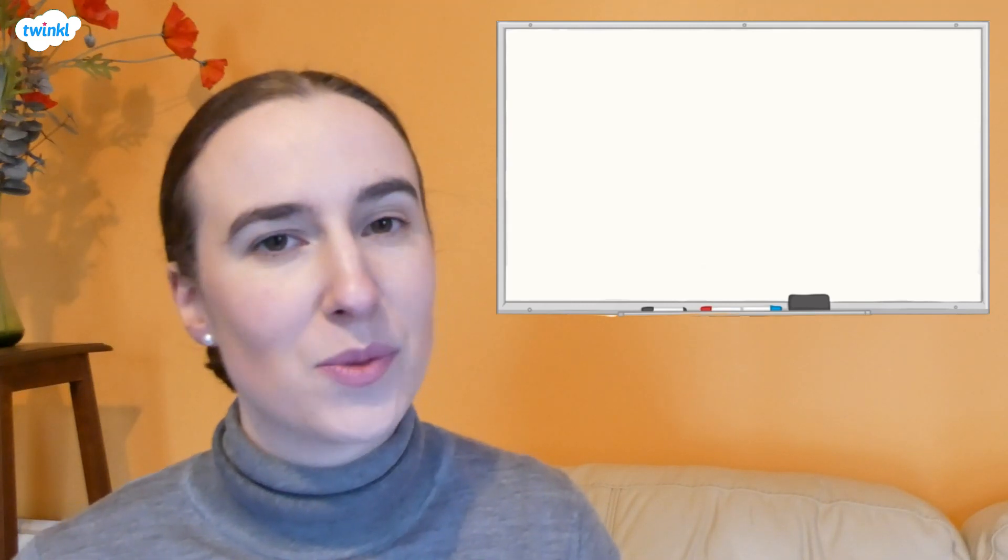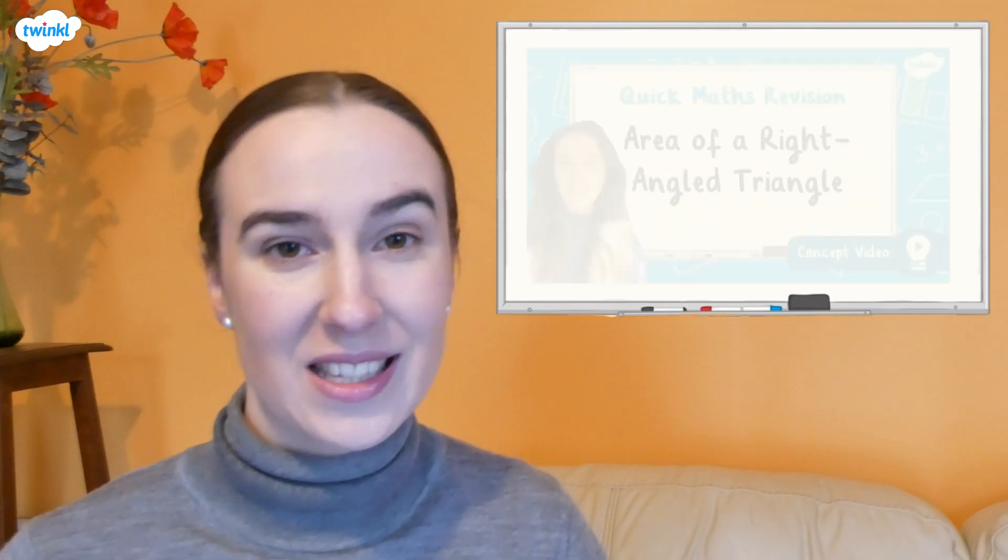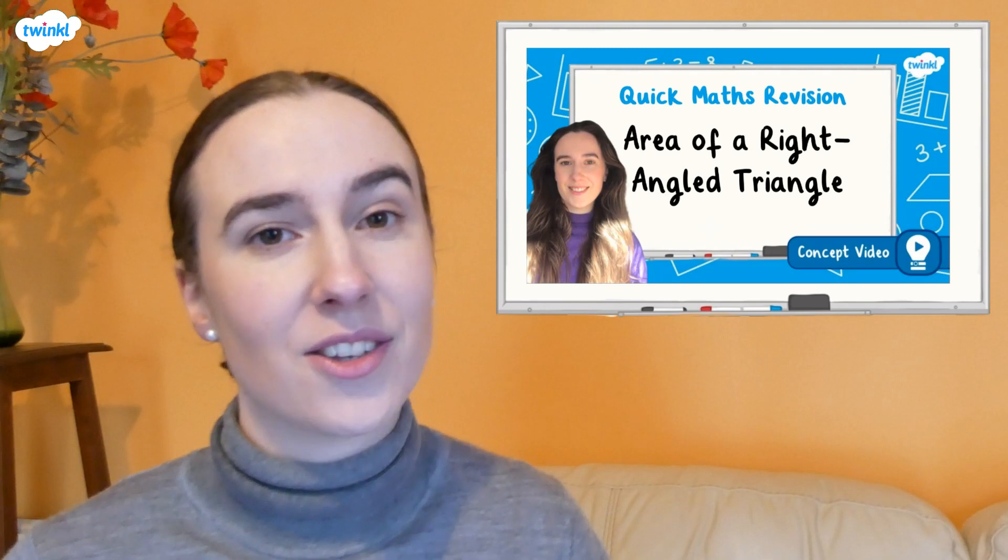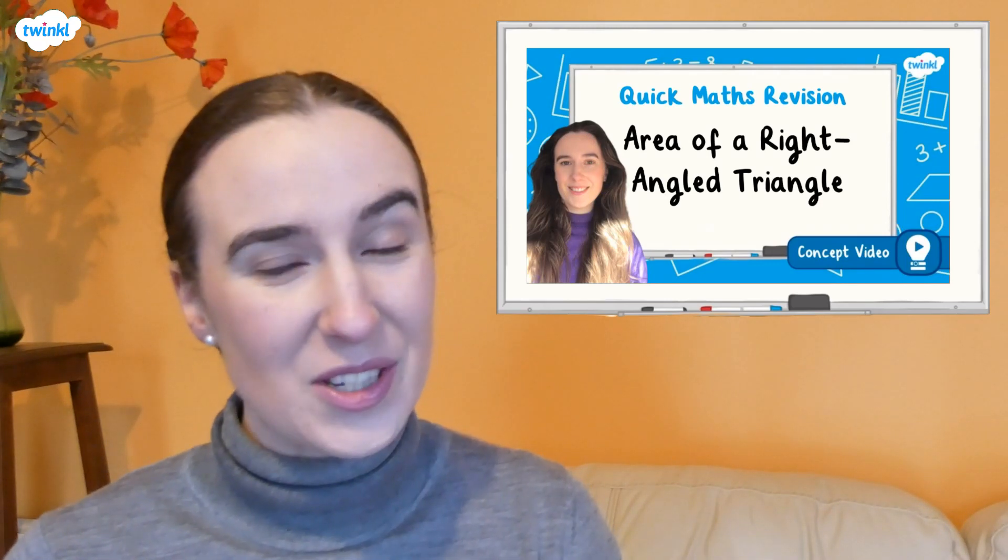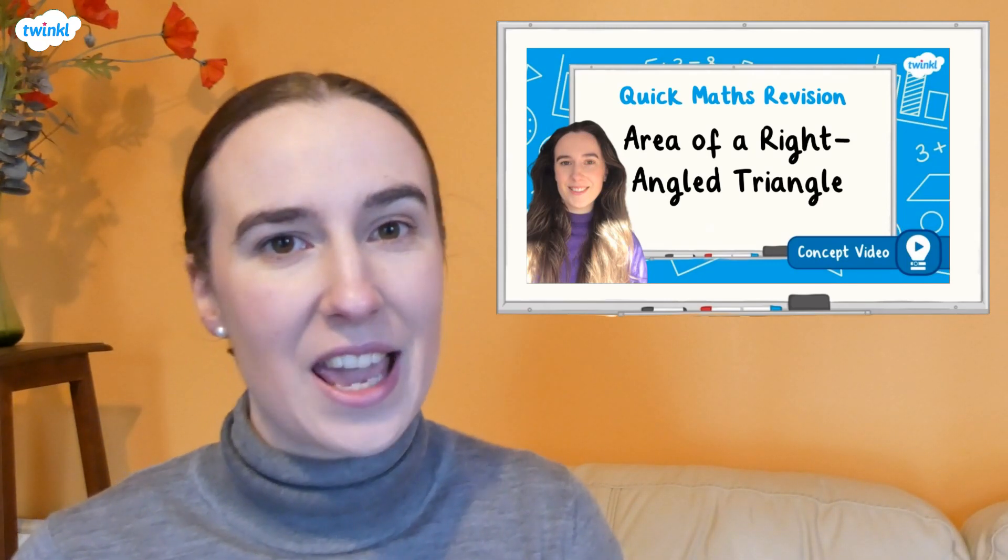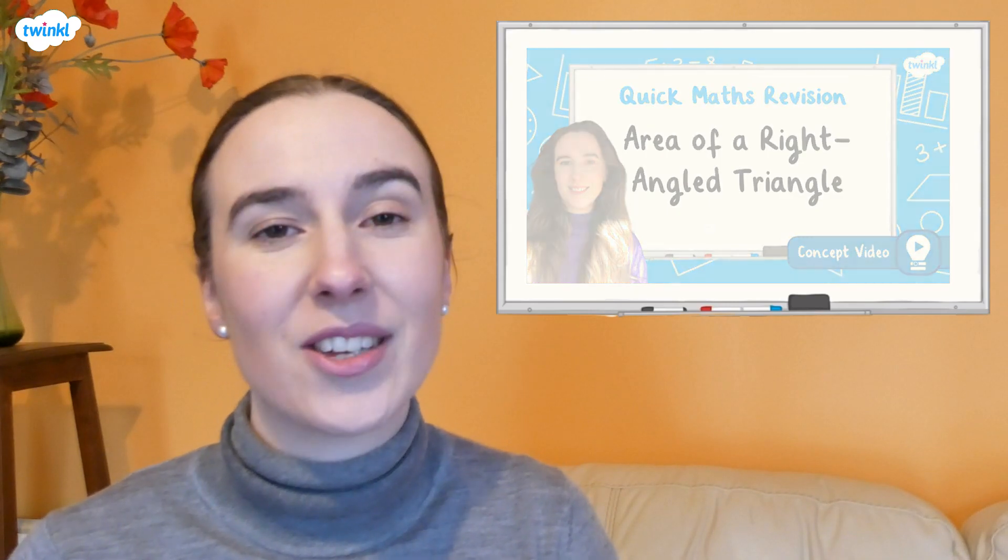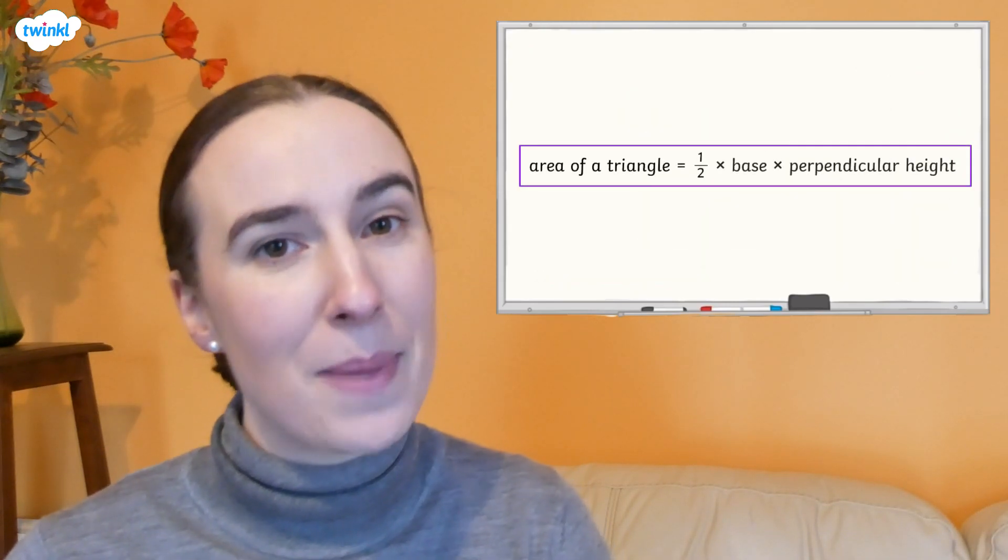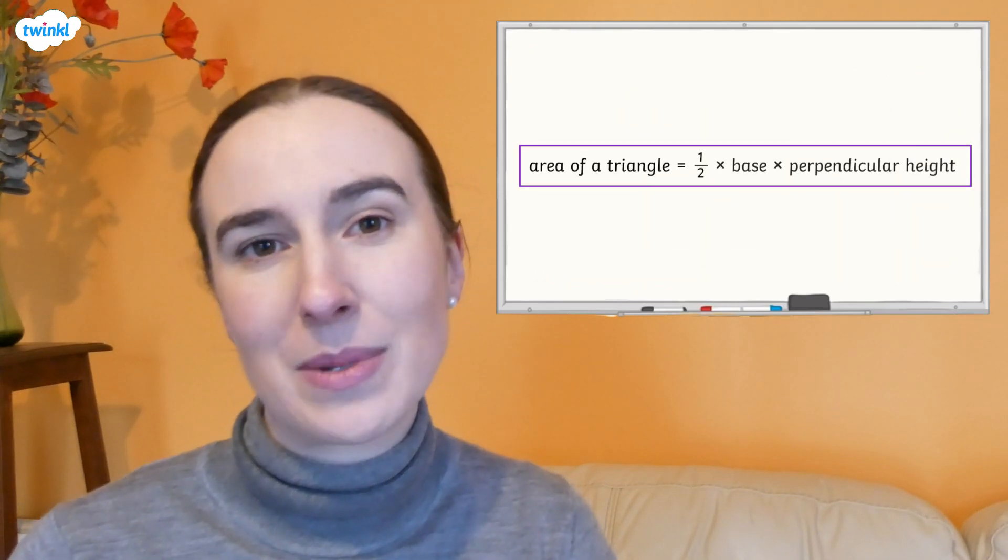If you haven't already, you might want to watch our video all about finding the area of right-angled triangles first. In that video, we find out how to find the area of a triangle by calculating half multiplied by base multiplied by perpendicular height.